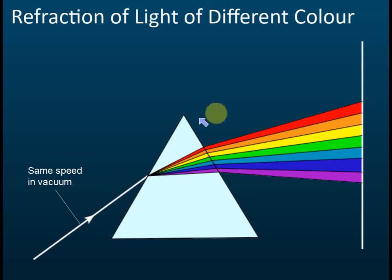When it moves into glass, red light moves faster than purple light. The speed of light decreases from red to purple.